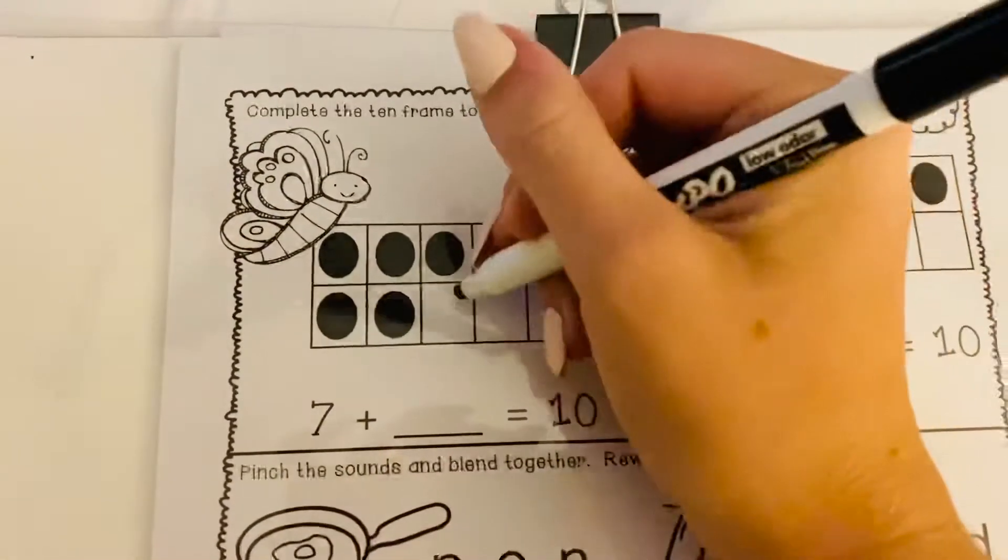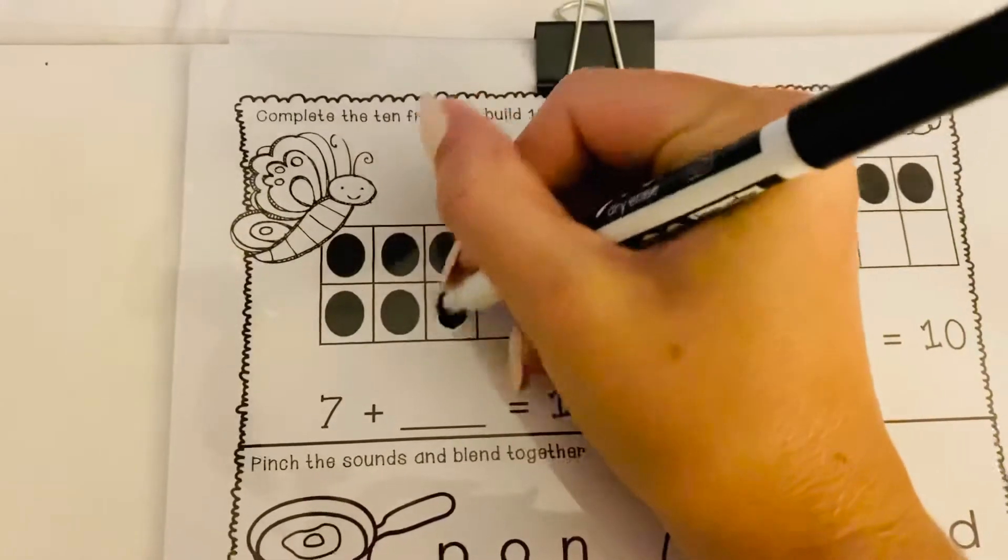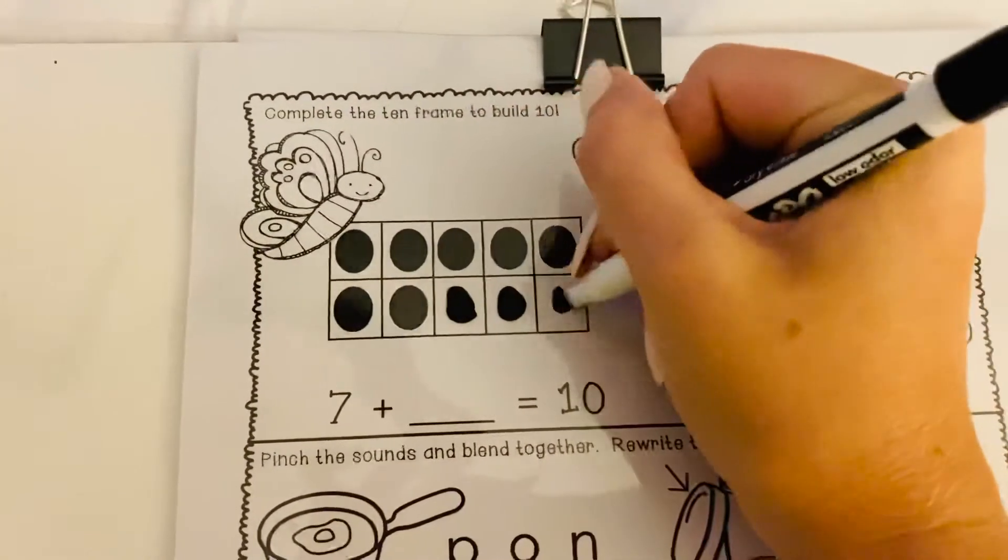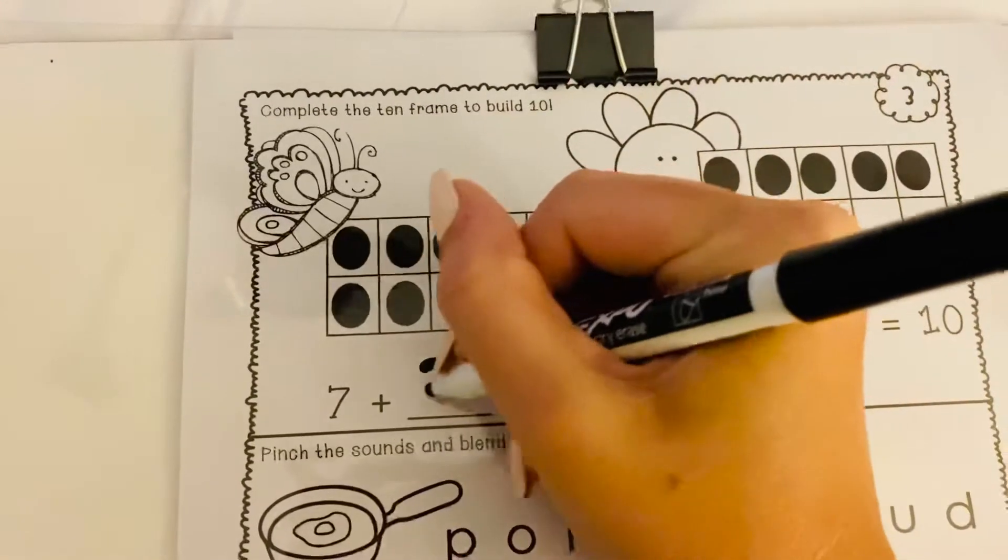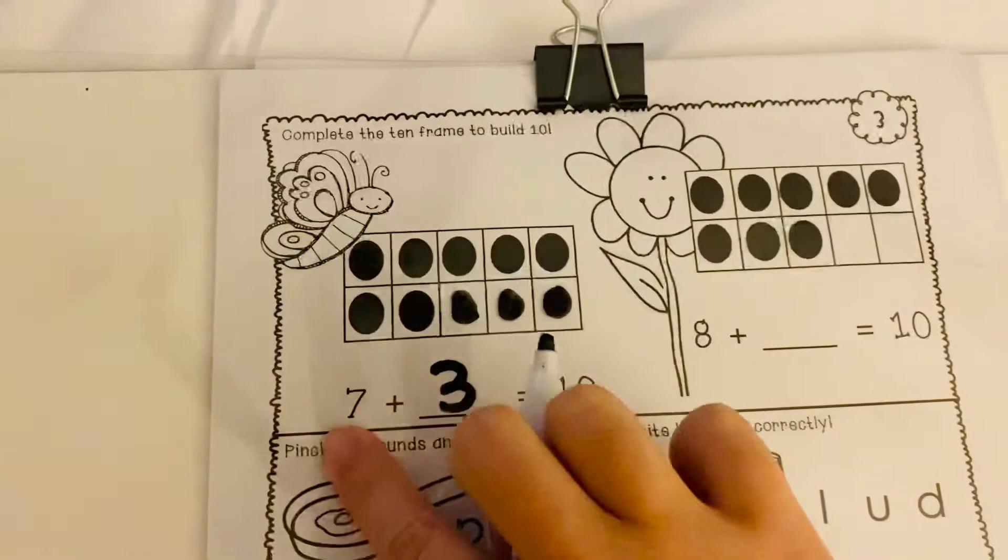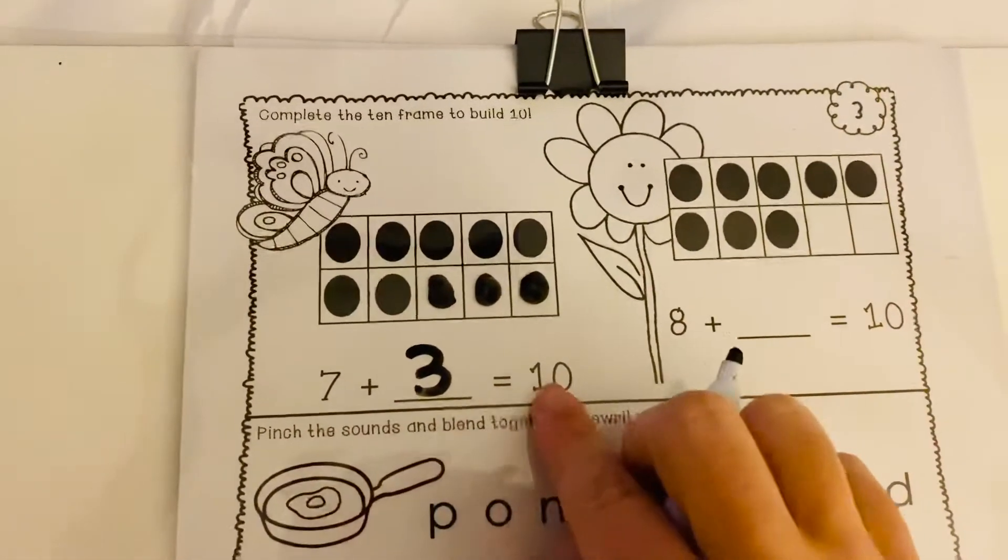We put that number right here plus, let's fill in the 10 frame. 1, 2, 3. So we drew three dots. So we put a big number 3 right here. That means 7 plus 3 equals 10.